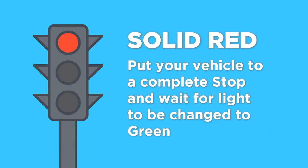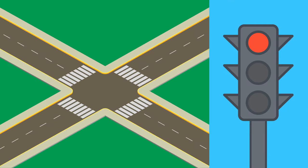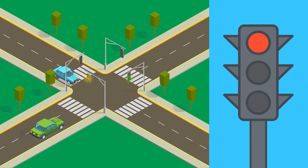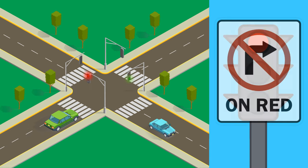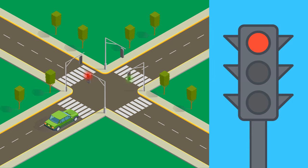Solid red light: put your vehicle to a complete stop and wait for green light. When seeing a red light at the intersection, come to a complete stop and wait until the light turns green. You may turn right, but check for any sign that says 'no right turn on red' and follow them.